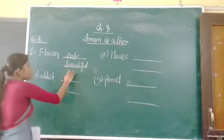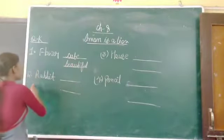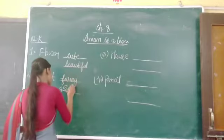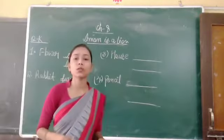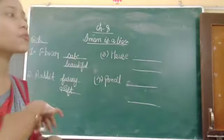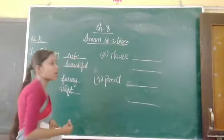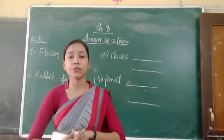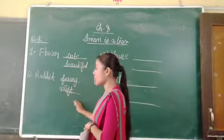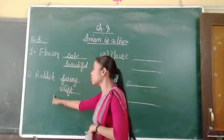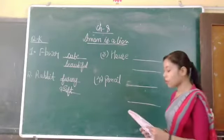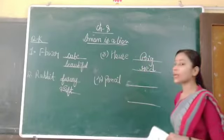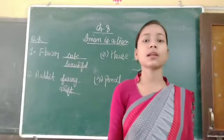For flower, I have chosen cute and beautiful. Cute and beautiful are words that can describe the word flower. Now we have rabbit. For rabbit, I have chosen furry and soft. The furry and soft are very suitable for rabbit. Now, house. For house, I have chosen big and red. Big and red are the describing words for house.